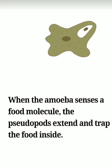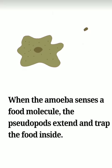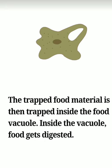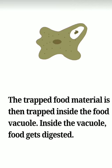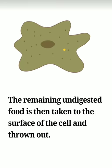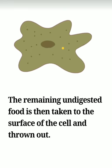When amoeba senses a food molecule, the pseudopods extend and trap the food inside. The trapped food material is then sent into the food vacuole, where the food gets digested. The digested food is then absorbed by the cytoplasm, and all nutrients present in it are absorbed. The undigested remaining food is taken to the surface of the cell where it is expelled outside.